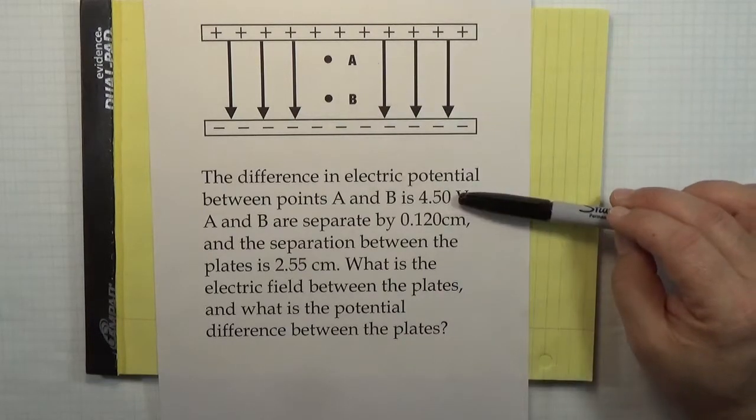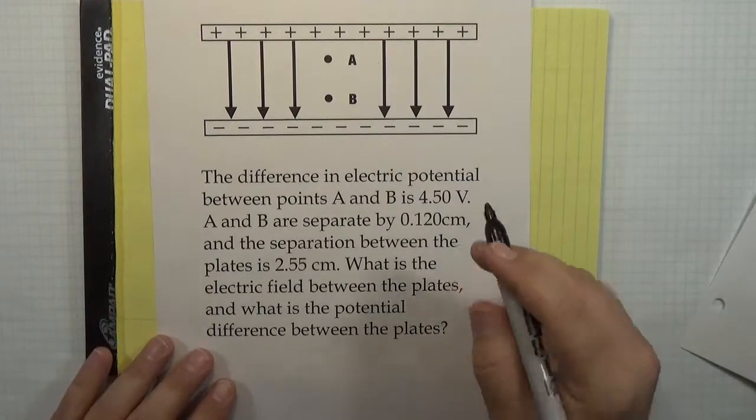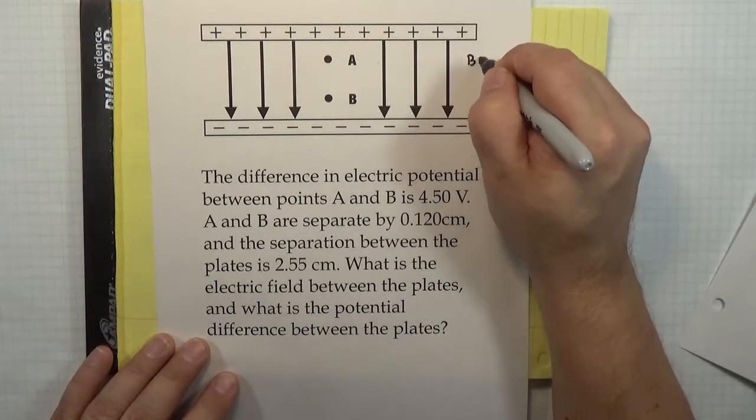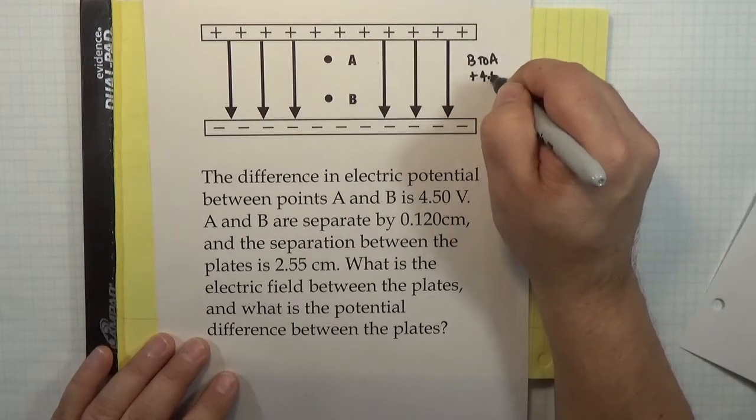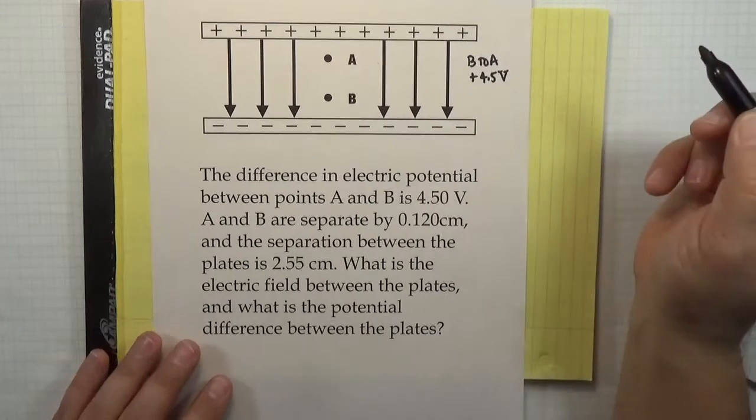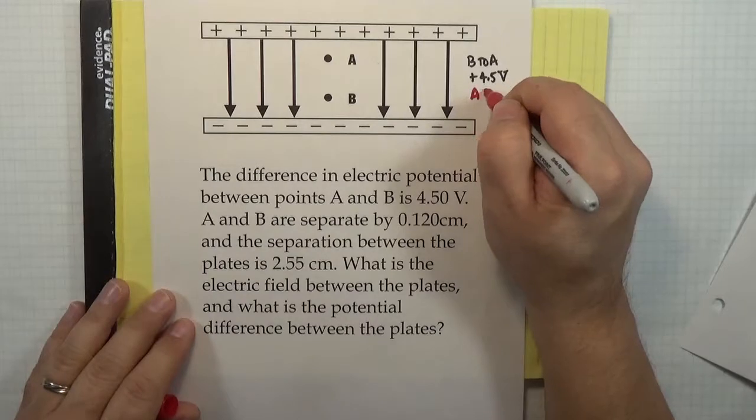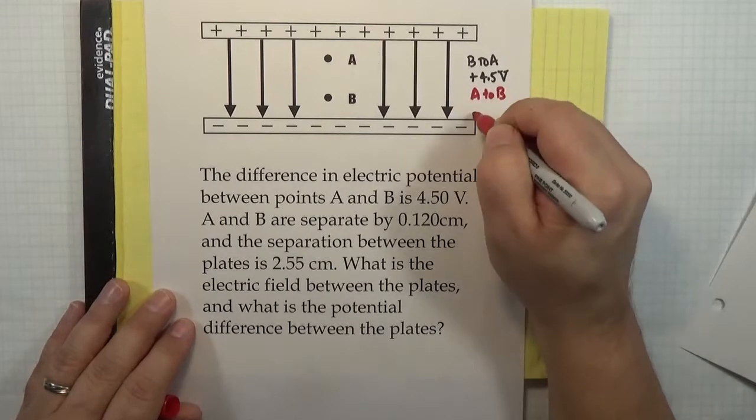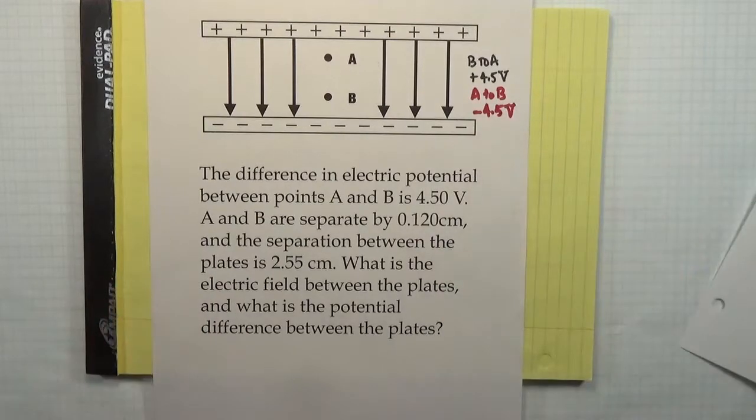And so if I go from B to A, then I get plus 4.5 volts of potential difference. But if I were to go from A to B, then I get minus 4.5 volts.